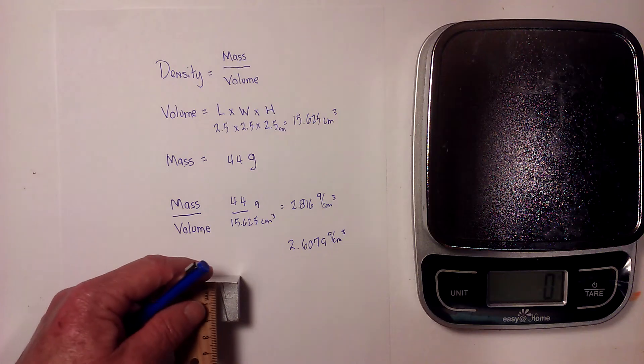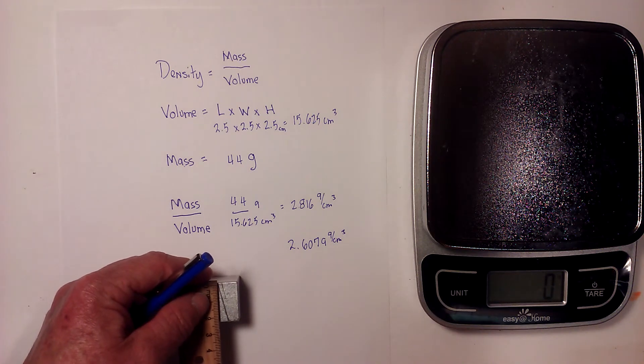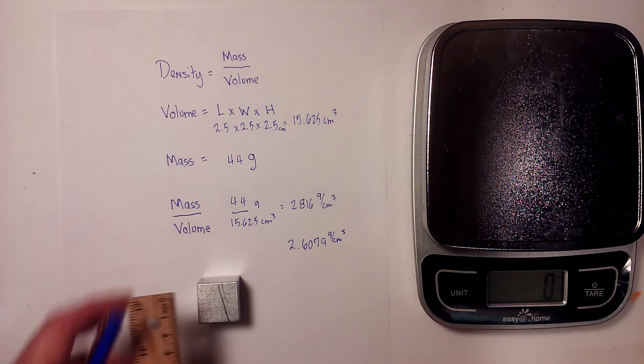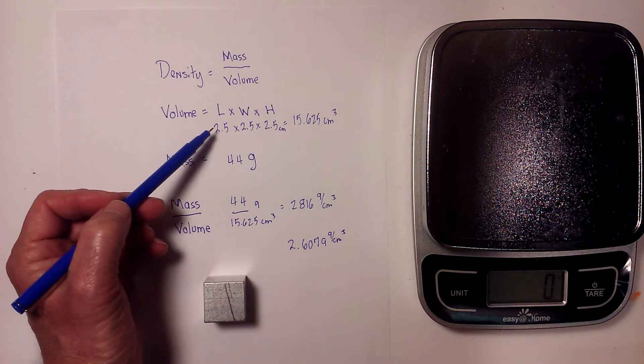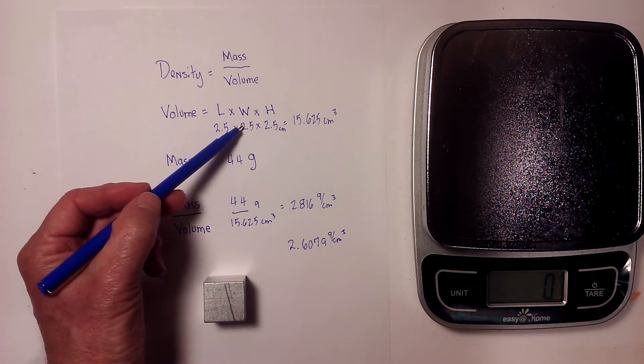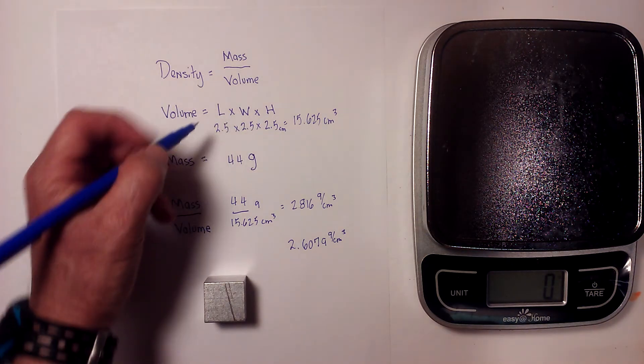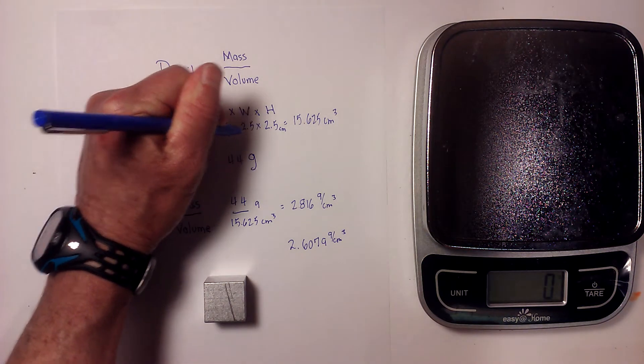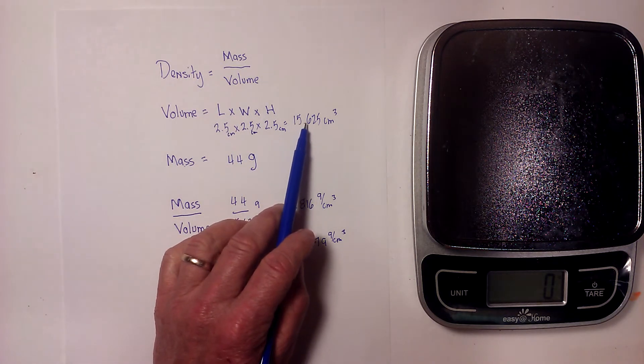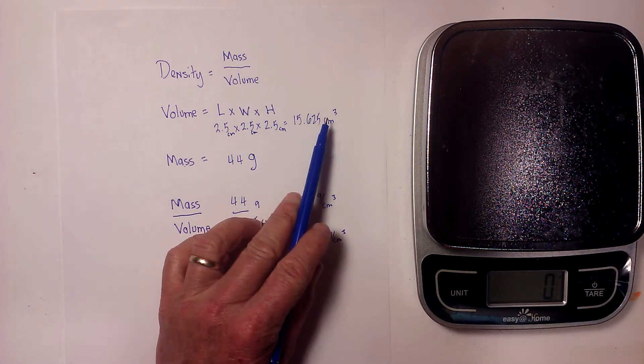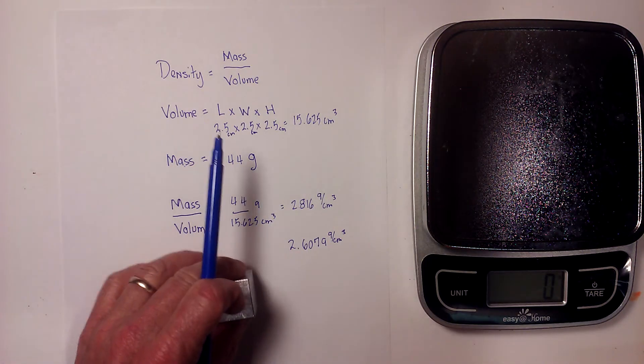I measured it in centimeters very carefully and it looked like it was 2.5. Since it's a cube I can use it three times, so it's 2.5 times 2.5 times 2.5, and each of these are in centimeters. That gave me 15.625 centimeters cubed for the volume.